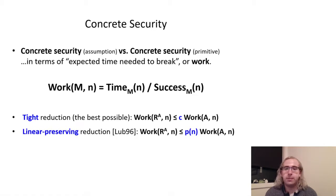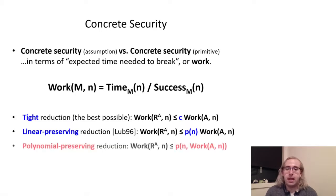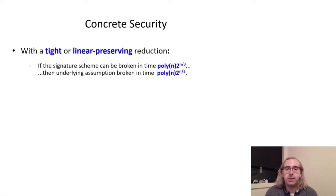If instead there's a poly-N factor difference, then we have what's known as a linear preserving reduction. And weaker than that is the notion of a polynomial preserving reduction, where the work needed to break the primitive is polynomial in the work needed to break the adversary. The important takeaway here is that tight and linear preserving reductions preserve asymptotic security. For instance, with a linear preserving reduction, security against poly of N times T time adversaries for the assumption implies, similarly, security against poly of N times T time adversaries for the primitive as well, which is ideal.